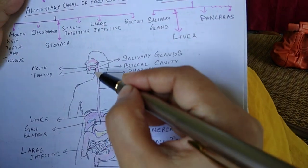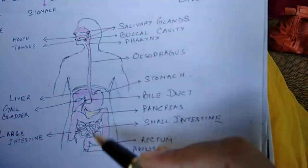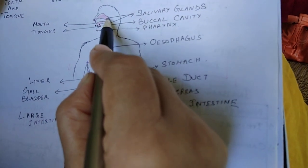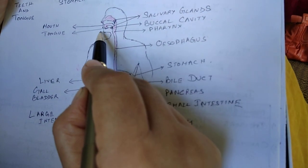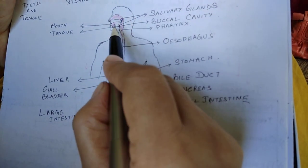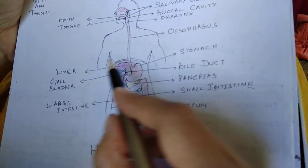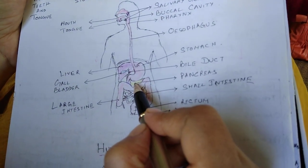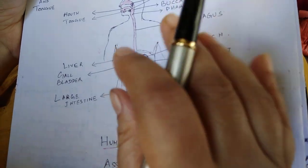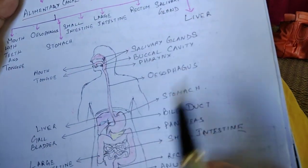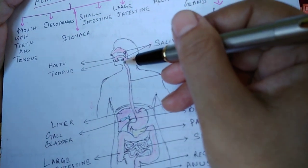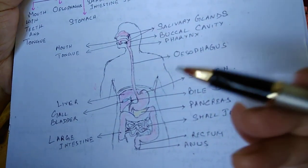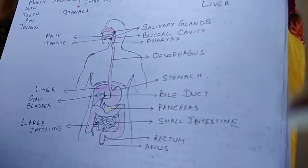While food travels from the mouth to the anus, there are associated glands. There are three pairs of salivary glands. The liver and the pancreas are also present. These glands release juices into the alimentary canal which contain enzymes that help in the digestion of food.